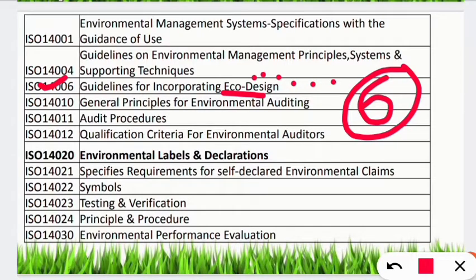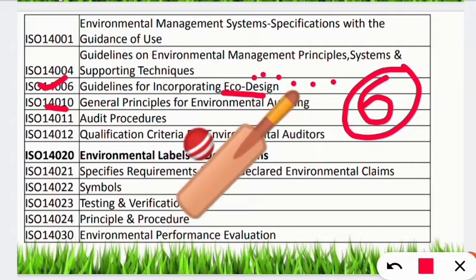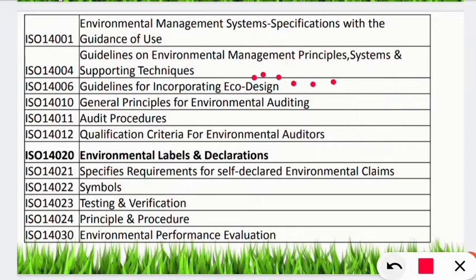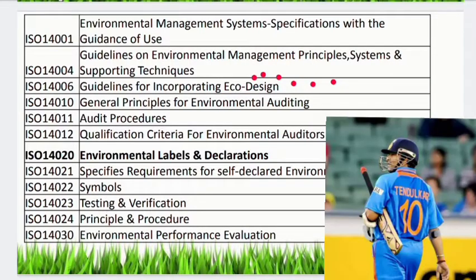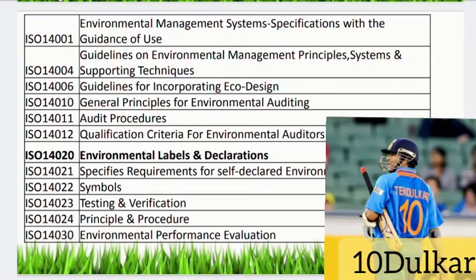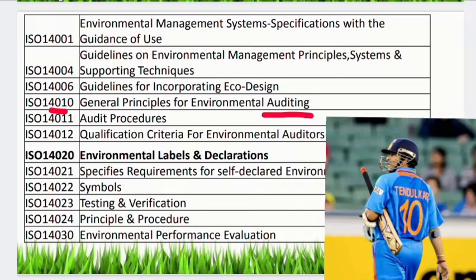Next, ISO 14010. Here we use cricketing knowledge. Jersey number 10 was the jersey number of Sachin Ramesh Tendulkar. Tendulkar is retired now, but he will do environmental auditing — like auditing whether BCCI is working correctly, whether correct players are selected. All this auditing and checking of current cricketers will be done by Tendulkar. So 14010 is for environmental auditing.